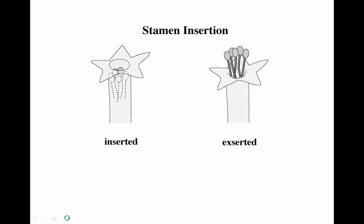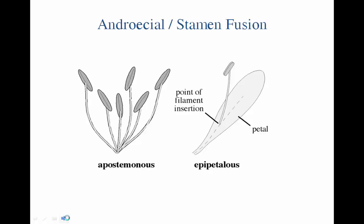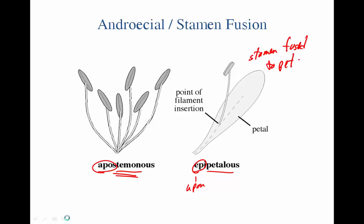Again, the roots are the important things. 'In' means inside and 'ex' means outside, so inserted means the stamens are inside the perianth, and exserted means they're outside, sticking out above the perianth. For fusion: 'apo' indicates the stamens are not fused with each other; 'epi' means upon, so epipetalous means the stamens are fused to the petal.